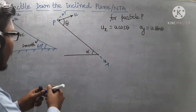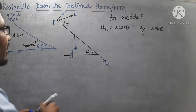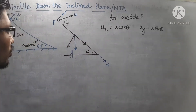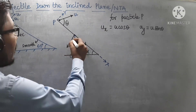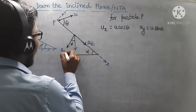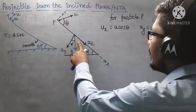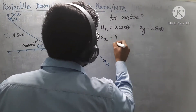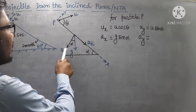Now let's talk about acceleration due to gravity. There are two components — one down the incline and one perpendicular to it. Since the incline angle is alpha, the angle between the incline and the gravity vector gives us: the acceleration component along x (down the incline) is g sinα, and the acceleration component along y (perpendicular to incline) is g cosα.